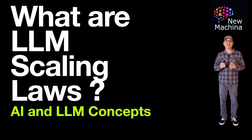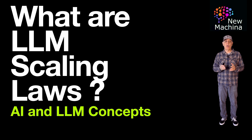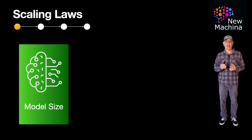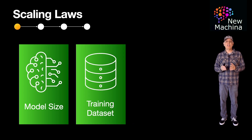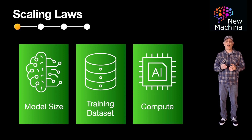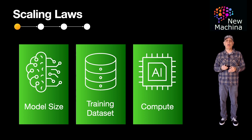So what do we mean by LLM Scaling Laws? LLM Scaling Laws describe how LLM performance improves predictably with scale. What exactly is being scaled here? The first is the size of the LLM model measured in parameters. The second is the size of the training data set. And the third is the amount of compute. Essentially, the LLM Scaling Laws state that performance of LLMs improves in a predictable manner following these scaling curves.